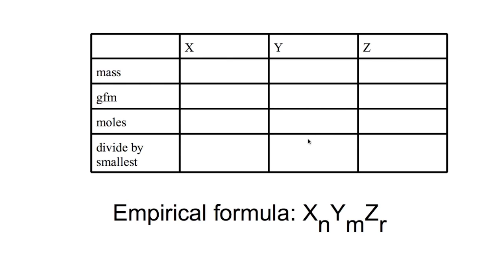When calculating empirical formulae, it is useful to set out your working in a table where you have the elements at the top, the masses found from combustion analysis, then the gram formula mass. You would then do mass divided by gram formula mass to get the moles of each element present, and then in the final step divide each of these moles by the smallest number. This will give you the empirical formulae.